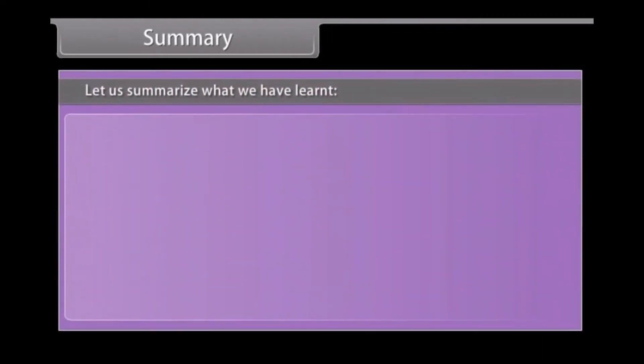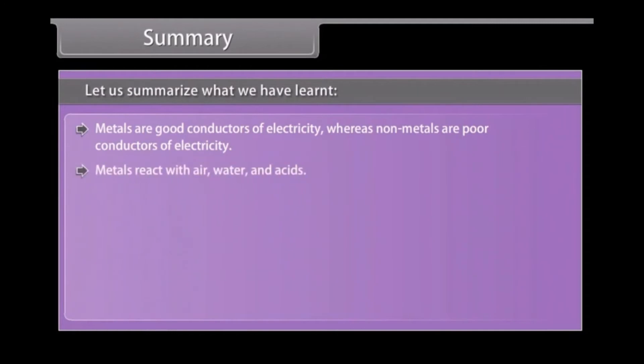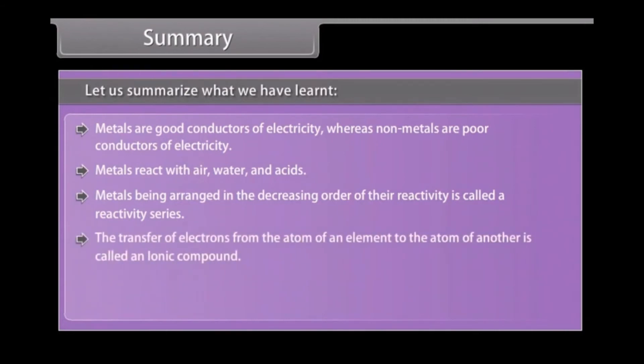Summary: Let us summarize what we have learned. Metals are good conductors of electricity whereas non-metals are poor conductors of electricity. Metals react with air, water and acids. Metals being arranged in the decreasing order of their reactivity is called a reactivity series. The transfer of electrons from the atom of an element to the atom of another is called an ionic compound. Metals are extracted from ores. The most widely used method for refining impure metals is called electrolytic refining.